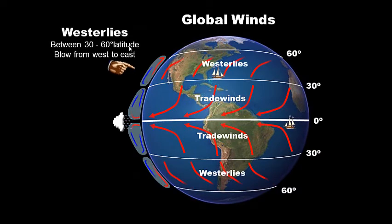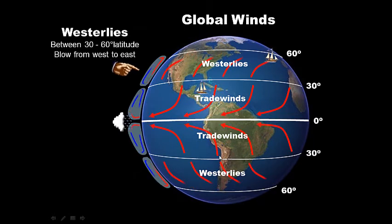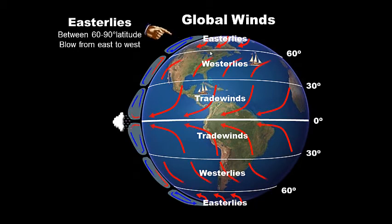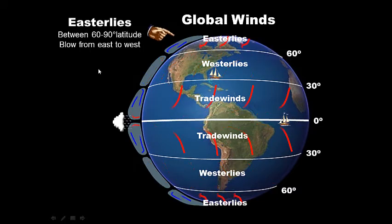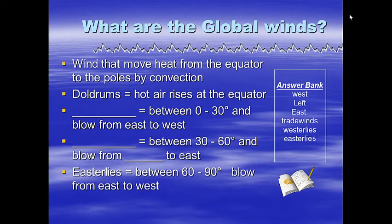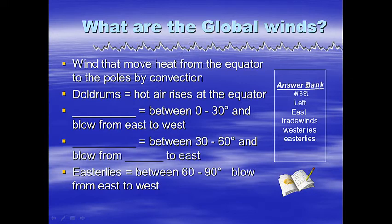Next, we have the westerlies — and we live in the westerlies. Between 30 and 60 degrees latitude, these winds blow roughly west to east, curved to the right due to the Coriolis effect in the northern hemisphere and to the left in the southern hemisphere. Then we have the easterlies between 60 and 90 degrees toward the north and south poles. They also curve to the right in the northern hemisphere and to the left in the southern hemisphere, blowing roughly from east to west. For your notes: What are the global wind patterns? Question on the left, answer on the right. Use the answer bank to complete the sentence.